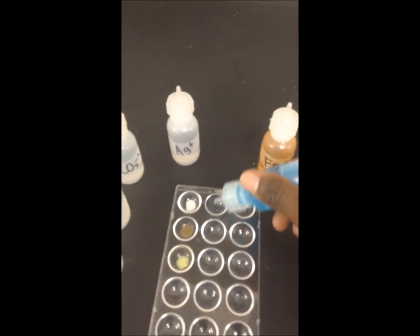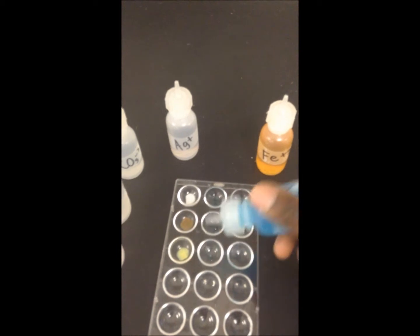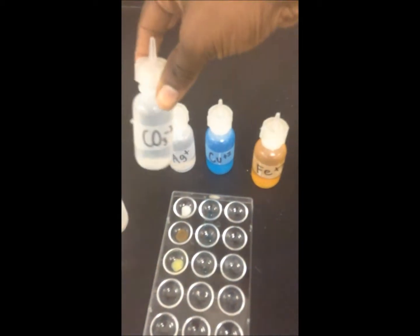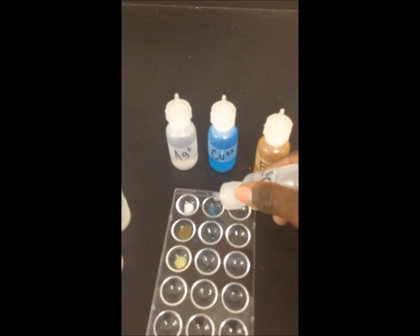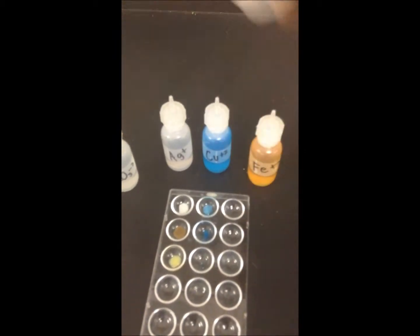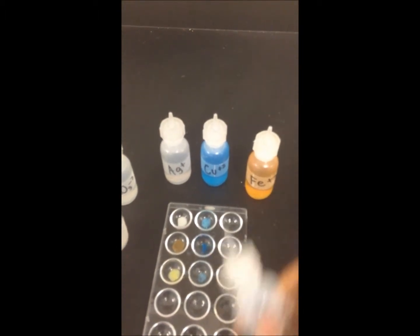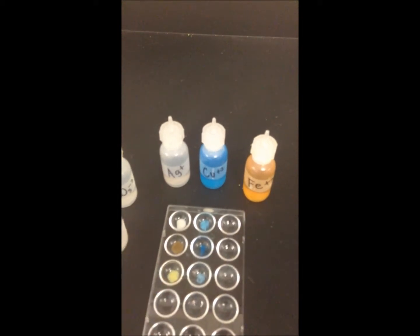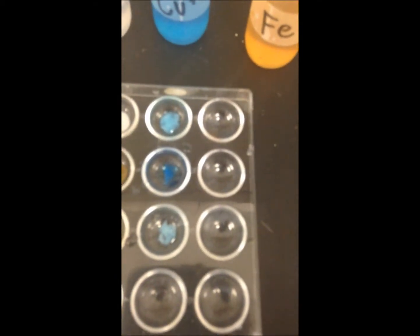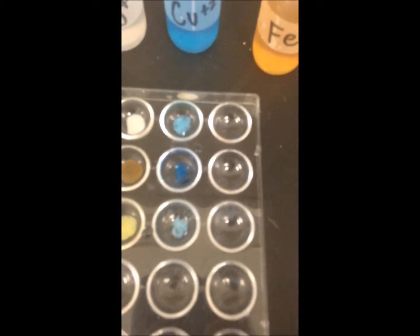Next we'll put copper plus two in every well, and now we'll go in and put our anions in. Carbonate first, hydroxide is second, and you can observe the color you see. And last we will have phosphate, and you can observe that color that you see. So each of them are a light or a regular blue.